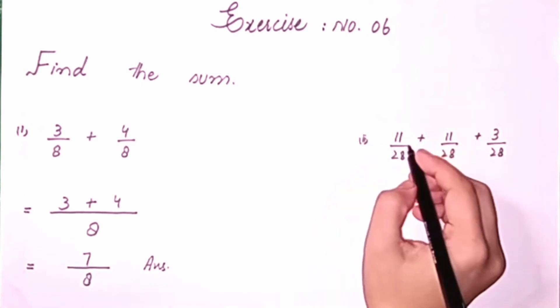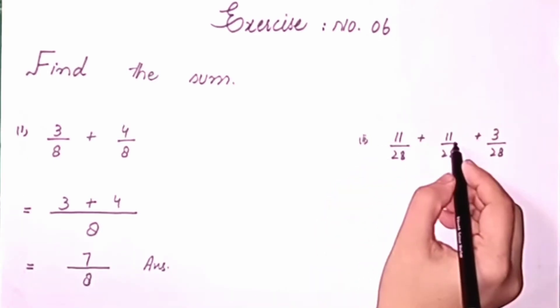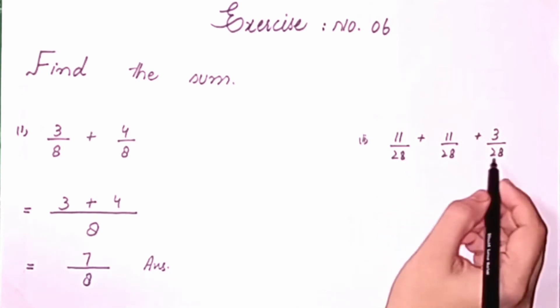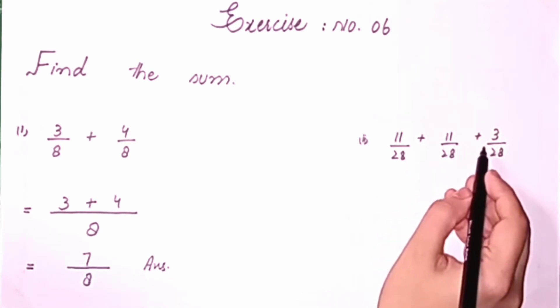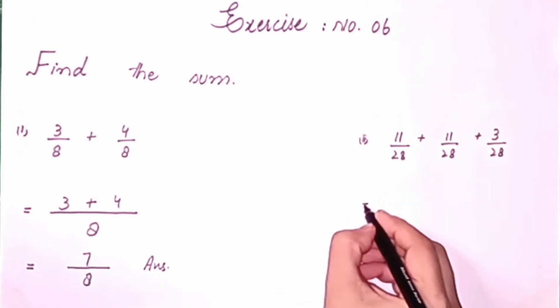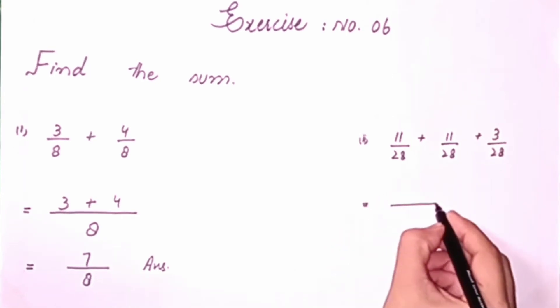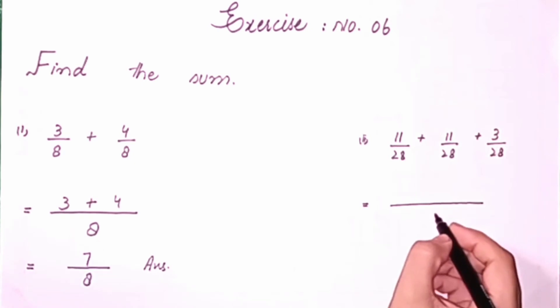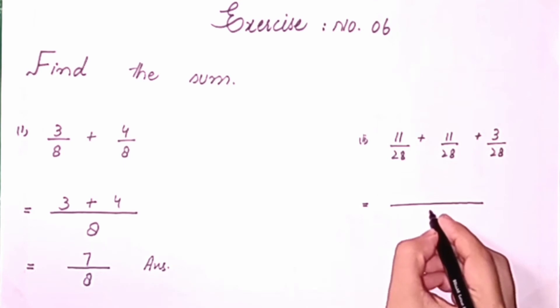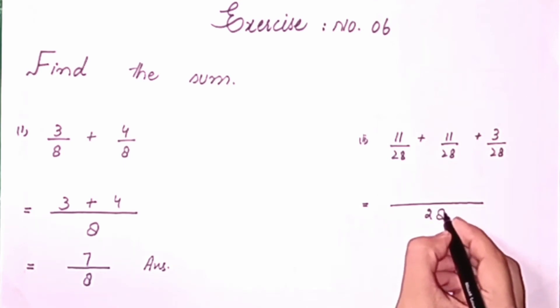Question number 2 is 11 upon 28 plus 11 upon 28 plus 3 upon 28. Students, here also you can see that three fractions are given, and their denominators are the same while the numerators change. As I told you, if the denominator is the same, we write it one time. So denominator 28 is the same, we will write it one time.